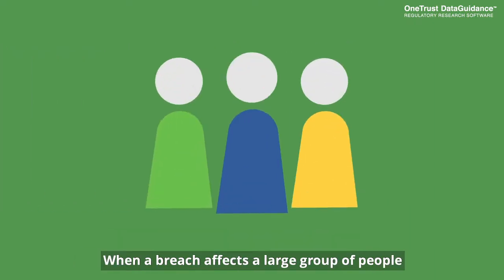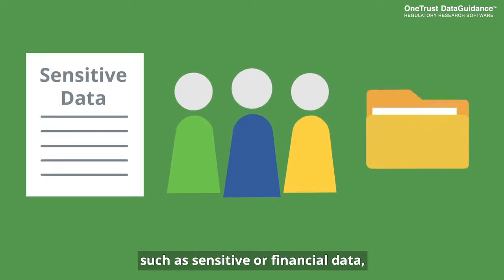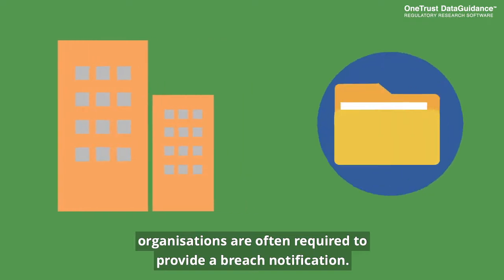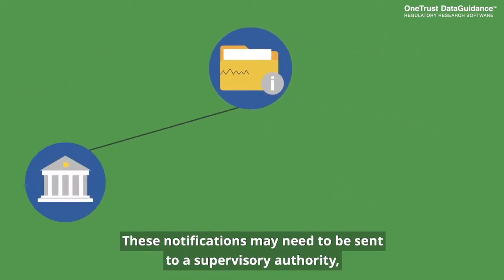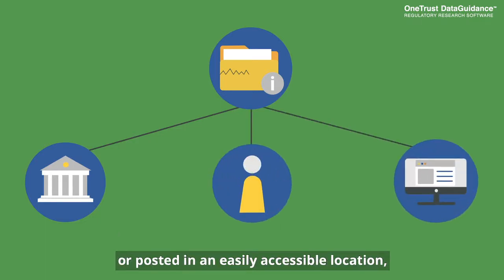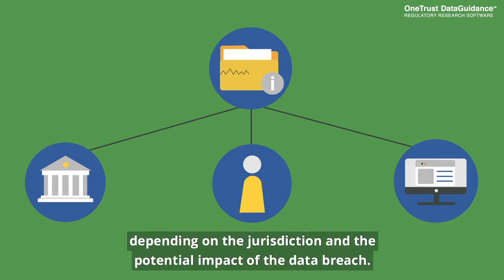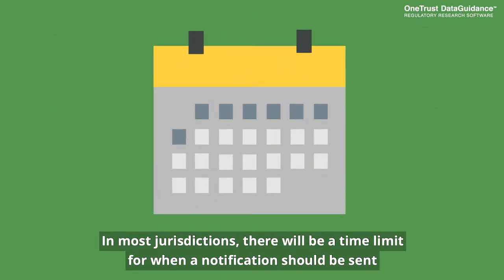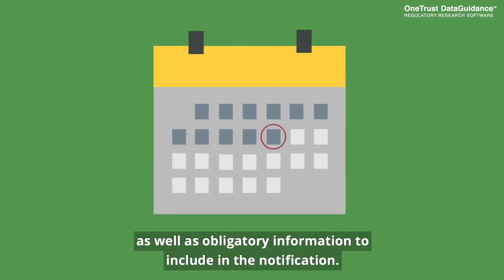When a breach affects a large group of people or contains important information such as sensitive or financial data, organizations are often required to provide a breach notification. These notifications may need to be sent to a supervisory authority, directly affected data subjects, or posted in an easily accessible location, depending on the jurisdiction and the potential impact of the data breach. In most jurisdictions, there will be a time limit for when a notification should be sent, as well as obligatory information to include in the notification.